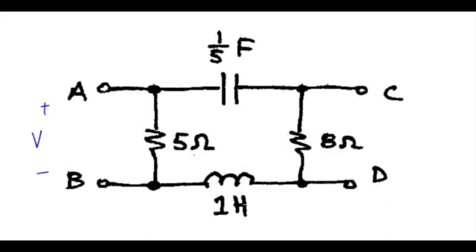Let's first convert the circuit to the S domain. One-fifth of a farad will look like 1 over one-fifth times S, so that will be 5 over S. Similarly, the impedance is L times S, so that's just S.